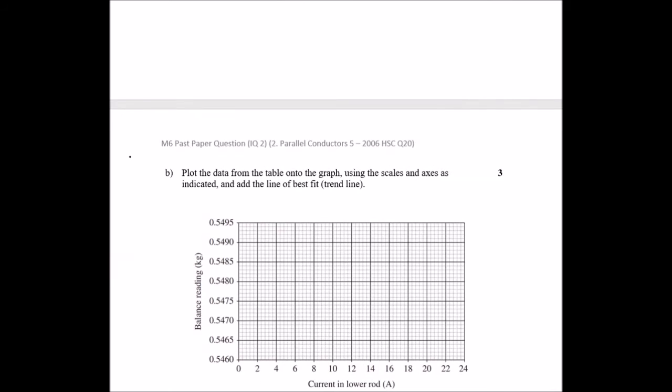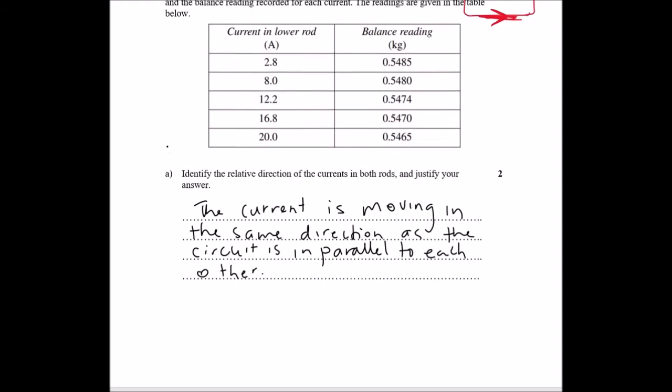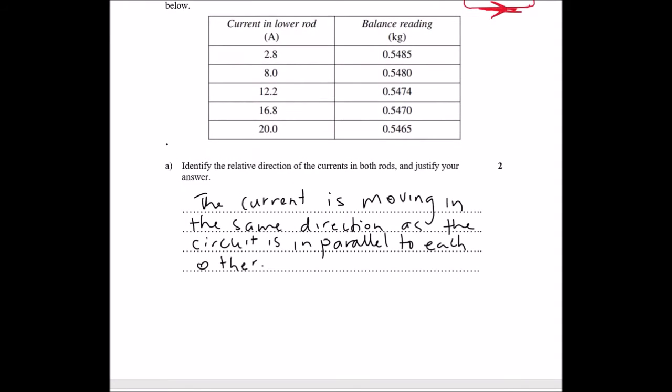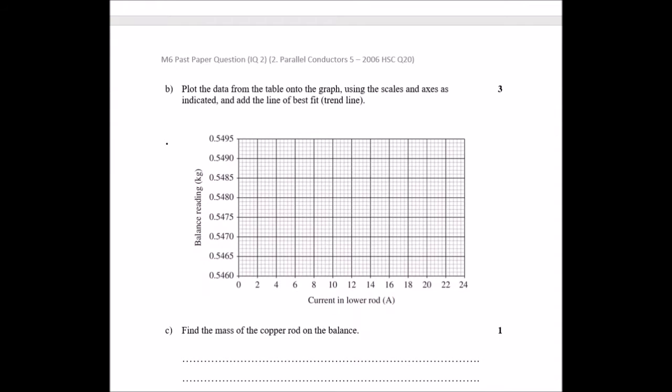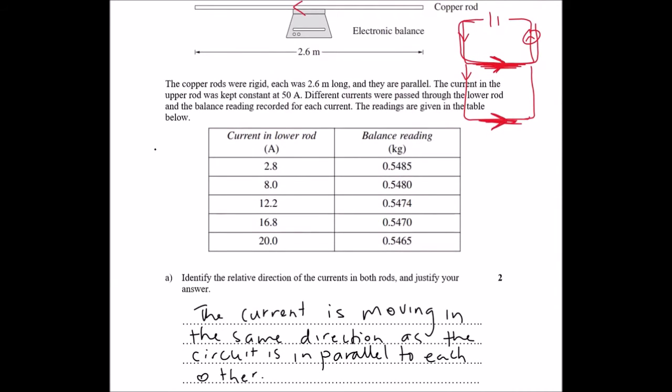It says plot the data from the table onto the graph using the scales and axes as indicated and add the line of best fit. Okay, this might take a while. So the current in the lower rod, 2.8, and balance reading there. I might just have to open this up in my other laptop, just so we can see it through.